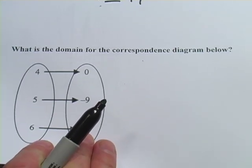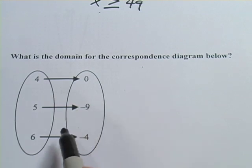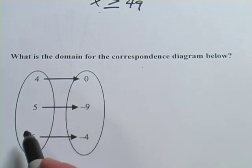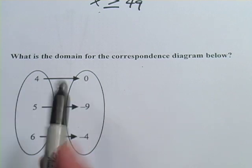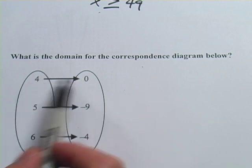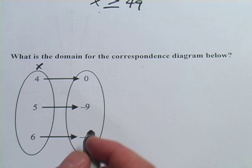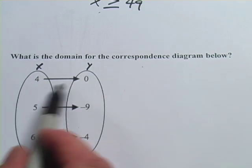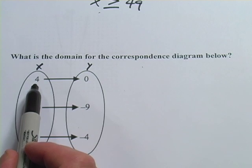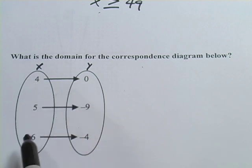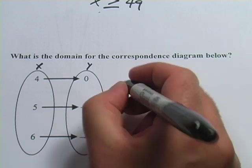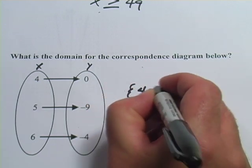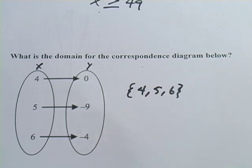This next problem shows a correspondence diagram, which is another way of representing a relation. Each pair of values connected by an arrow represents a point — for example, 4 maps to 0, meaning the x-value is 4 and the y-value is 0. The question asks for the domain. The domain is all the x-values, which are the values on the left side of the diagram. You can write that as the set {4, 5, 6}.